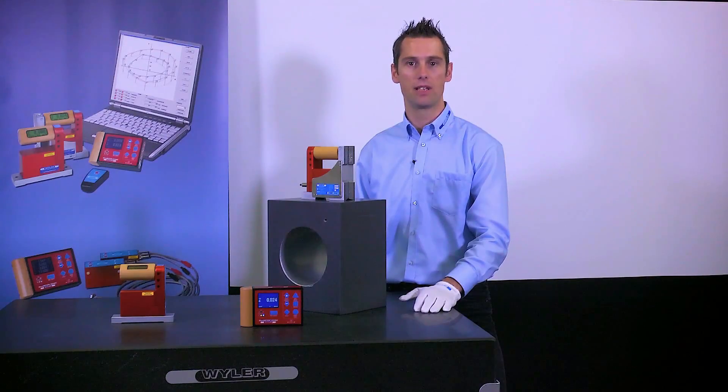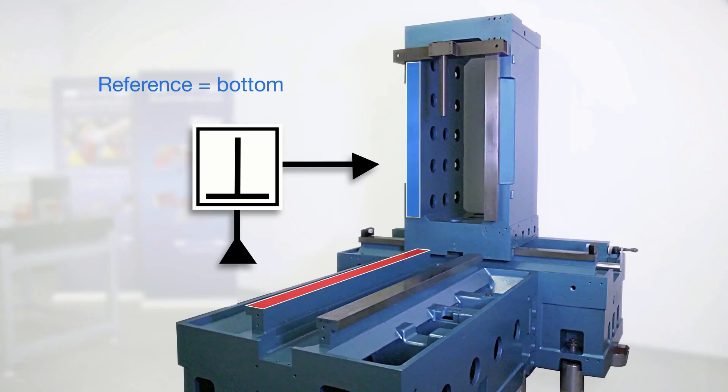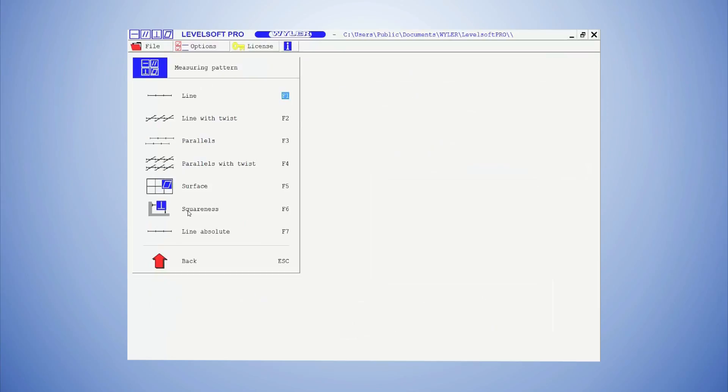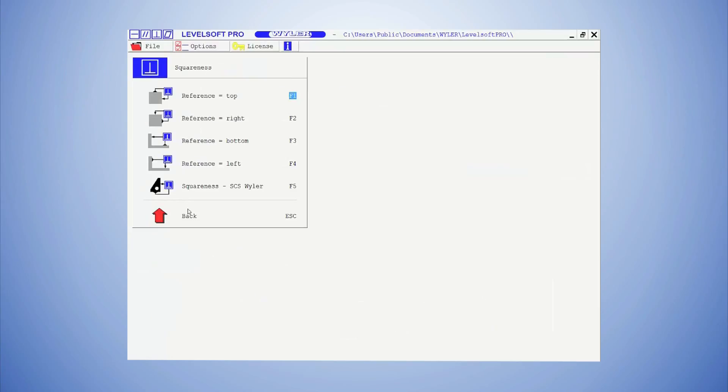Now that we have determined the angular error, we can start with the actual measurement. Let's recall, we would like to measure how perpendicular the blue vertical guideway of this machine is in comparison to the red horizontal guideway. That means the reference is the horizontal guideway. We open the Levelsoft software and choose the object's squareness and then the option reference equals bottom.